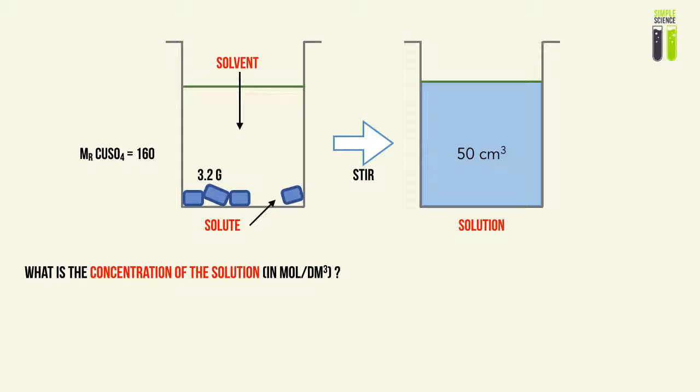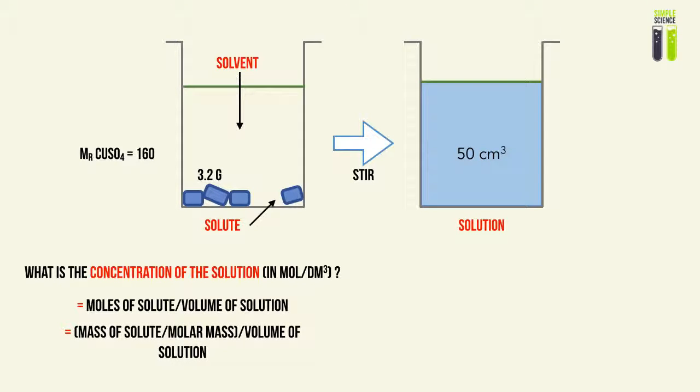In this situation, we are not given the moles of solute but rather the mass of the solute. So we need to find the number of moles. Moles equals mass over molar mass. The equation becomes: mass of solute divided by molar mass, all divided by the volume of solution. Mass of solute divided by molar mass gives the moles of solute; dividing by volume of solution gives the concentration. Doing this calculation gives a concentration of 4 molar.